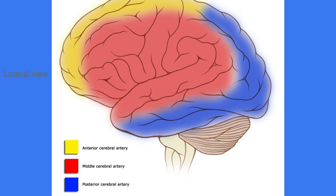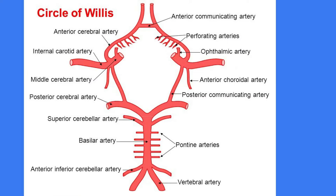This illustrates the different parts of the brain and their blood supply. This includes the supratentorial area. The one in yellow is the anterior cerebral artery territory, the one in red is the middle cerebral artery territory, and the one in blue is the posterior cerebral artery territory. This is the famous circle of Willis. The anterior circulation shows the internal carotid artery dividing into the anterior cerebral and middle cerebral arteries. The posterior circulation shows the two vertebral arteries uniting to form the basilar artery, which gives branches like the anterior inferior cerebellar arteries, the pontine arteries, and then divides into the two posterior cerebral arteries.